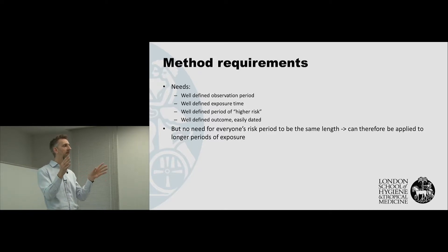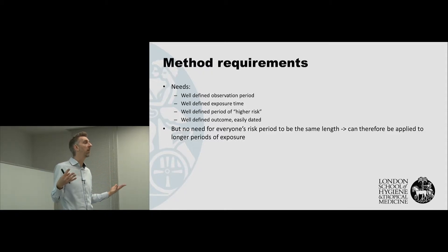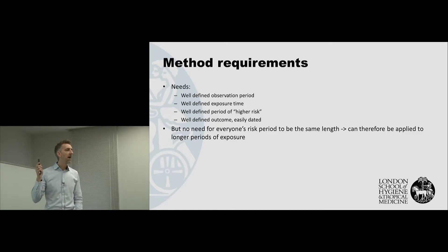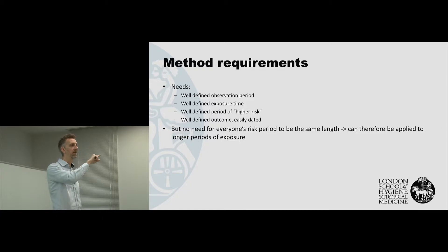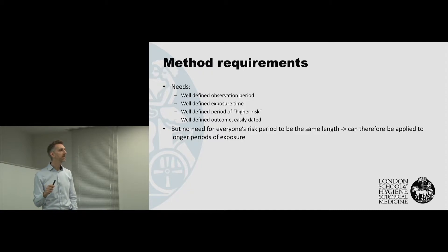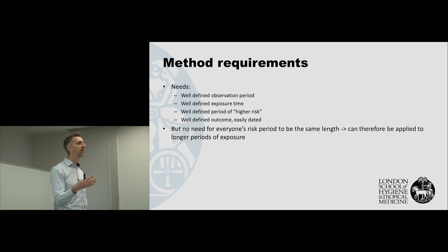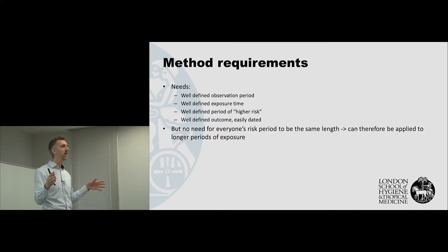We need to think in advance what those periods should be — we would need to do that in any other kind of design as well. The outcome itself also has to be easily dated, so we know exactly when it happened, because we're going to place it precisely on this observation period timeline. There's no need for everybody's risk period to be the same length, so it's fine for people to have different length exposure periods.